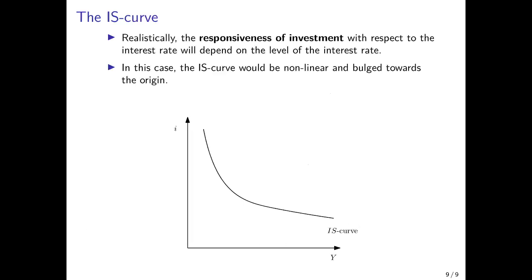This concludes the description of the IS curve, which is a downward-sloping curve in the space of the interest rate and income or output, depicting the equilibria in the goods market for a changing interest rate.